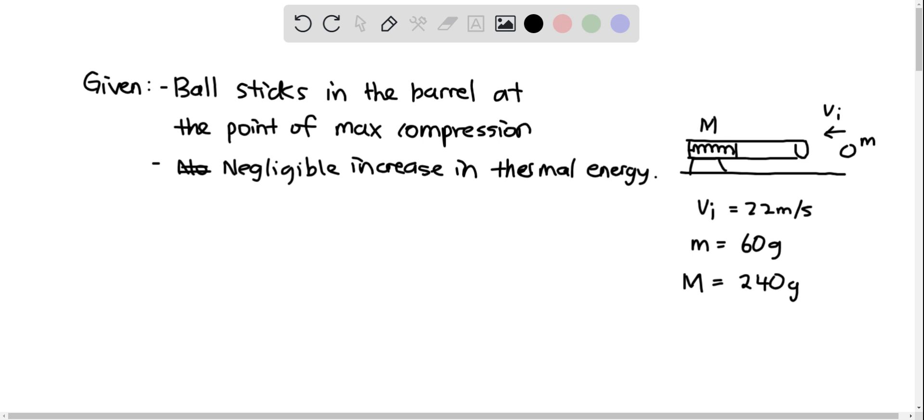We want to find the speed of the spring gun after the ball stops in the barrel, and the fraction of initial kinetic energy of the ball stored in the spring. The whole thing is on a frictionless surface.